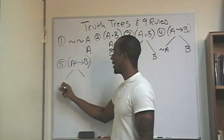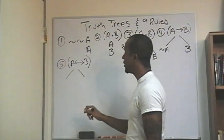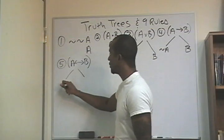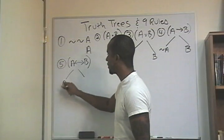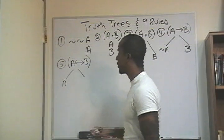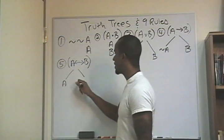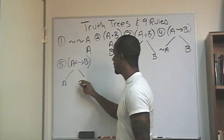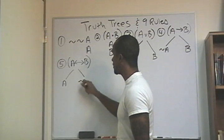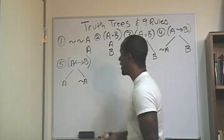On this side of the branch, I'm going to bring my A. On this side of the branch, I'm going to bring the negation of that — not A.